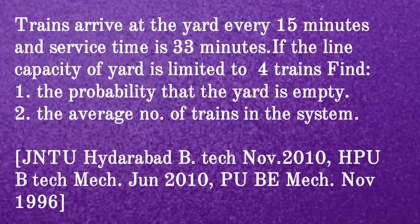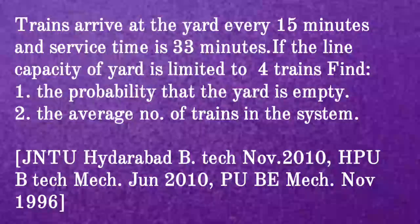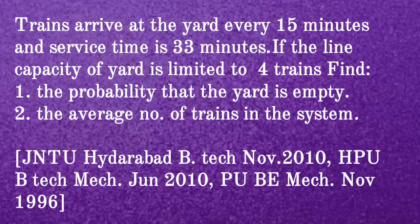First problem: Trains arrive at the yard every 15 minutes and the service time is 33 minutes. If the line capacity of the yard is limited to 4 trains, find (1) the probability that the yard is empty, and (2) the average number of trains in the system. This question was asked in JNTU Hyderabad B.Tech November 2010, HPU B.Tech June 2010, and PUBE November 1996.